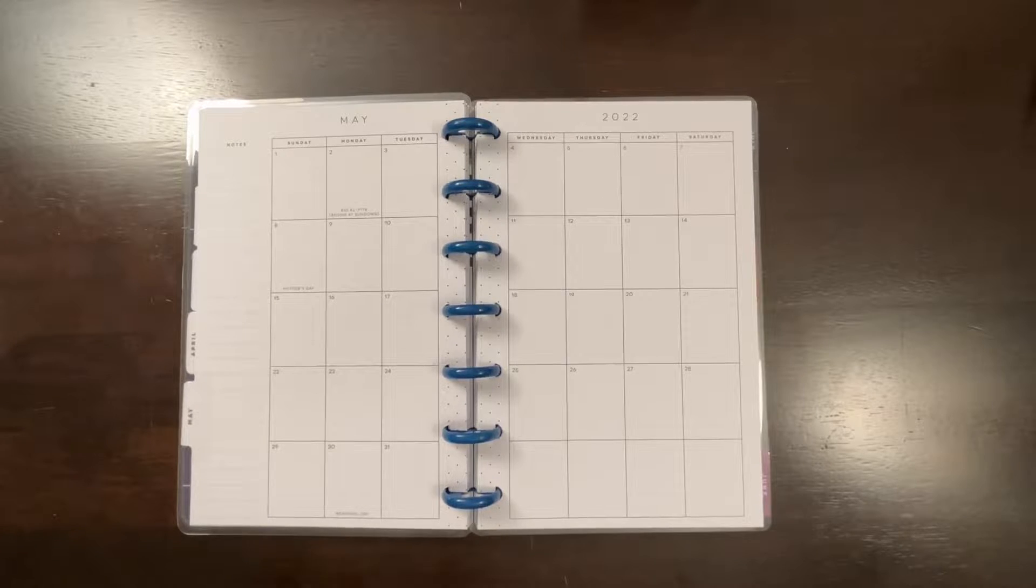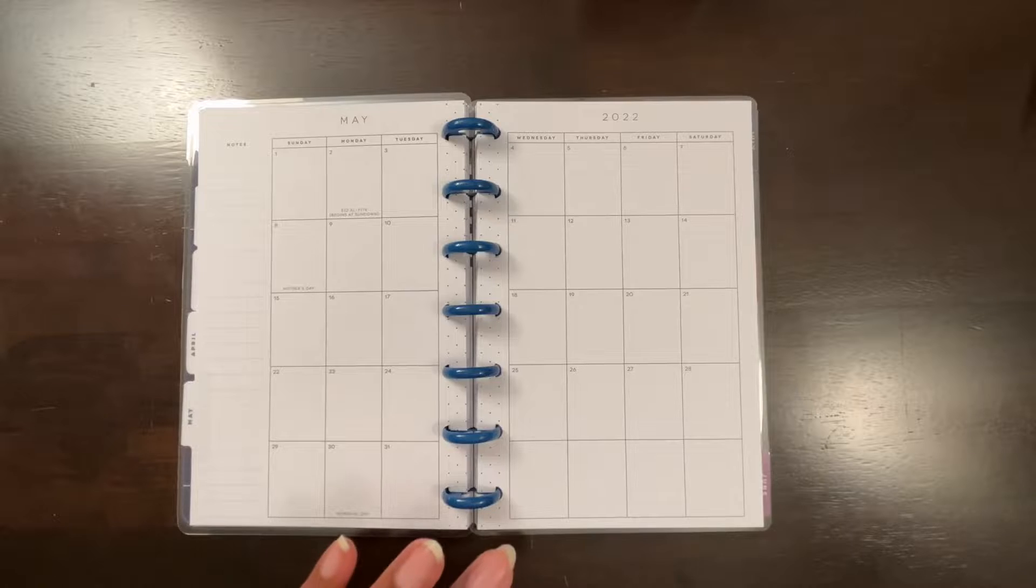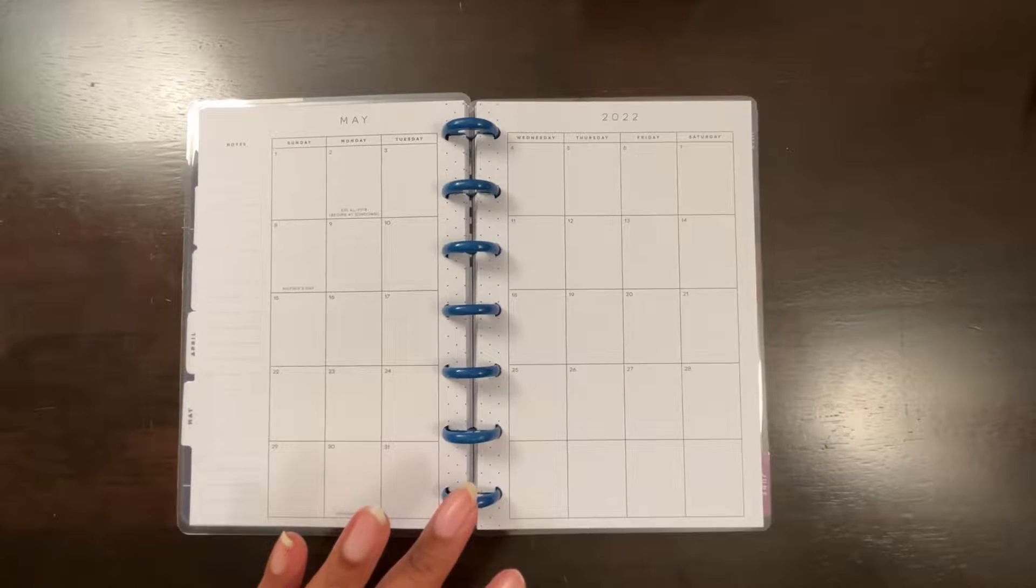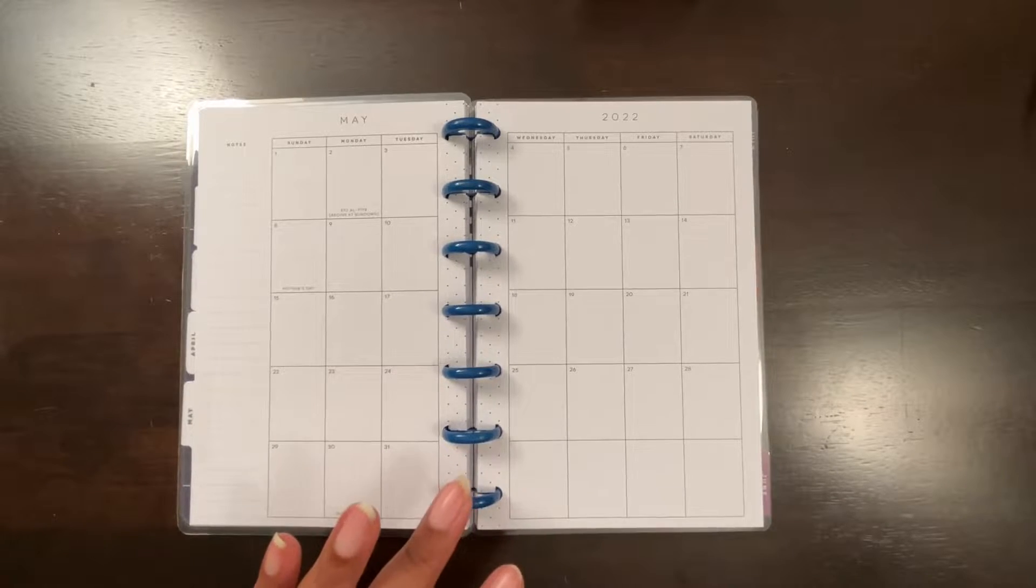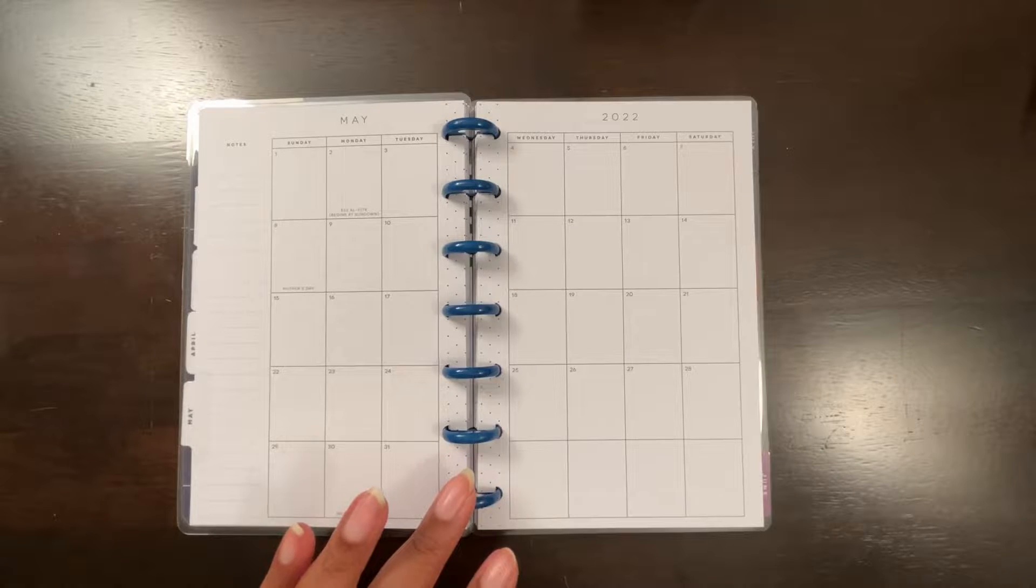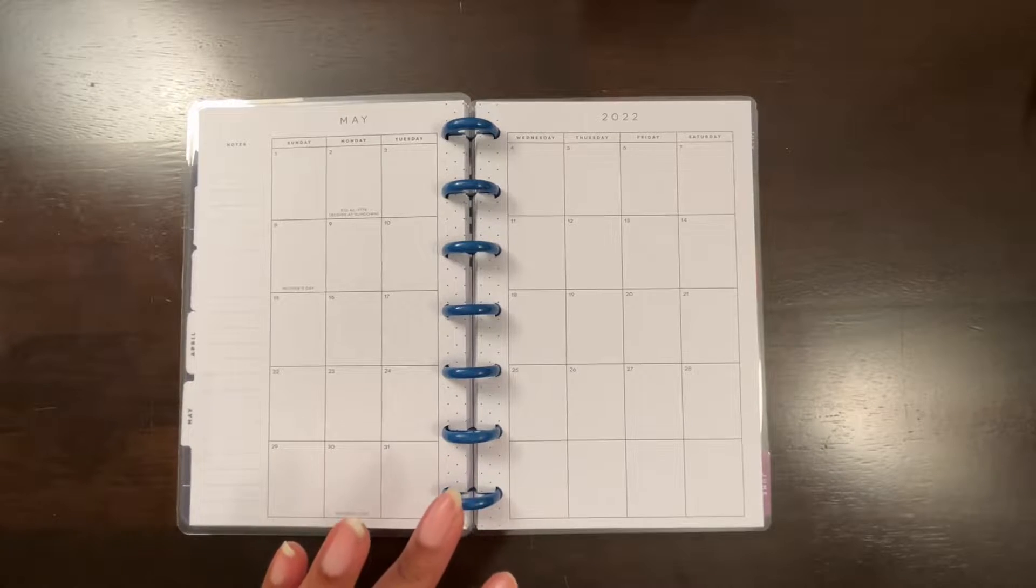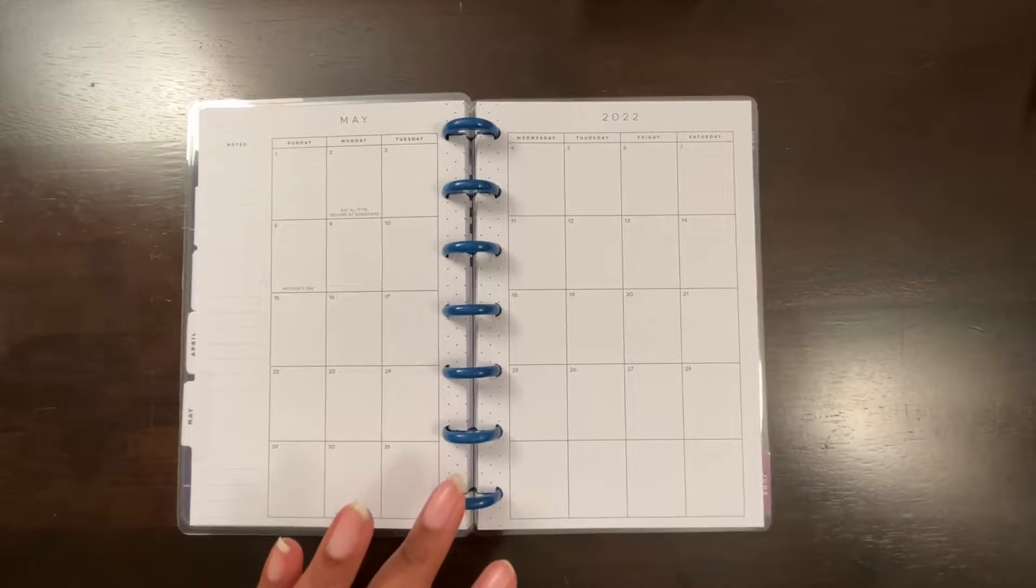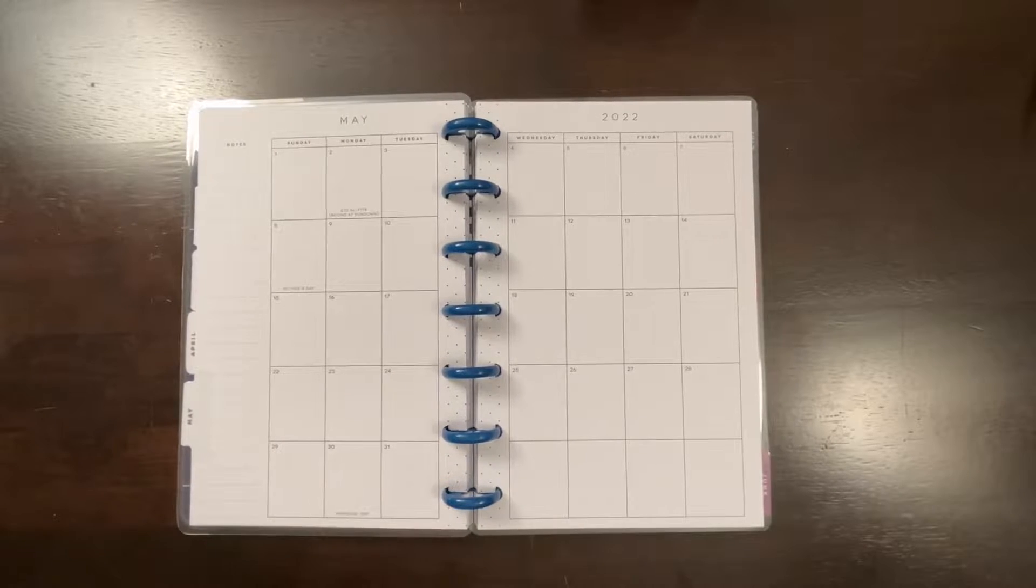Hi guys, it's Lee Gennaro back with another video and today I'm going to do some planning in this mini happy planner. This is a vertical happy planner. I found this on clearance at Hobby Lobby. It was $5.99 somewhere around in there. So I grabbed it.